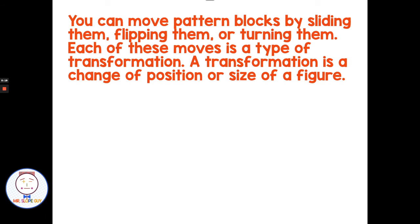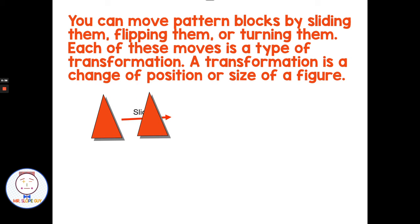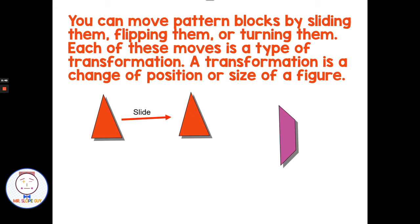You can move pattern blocks by sliding them, flipping them, or turning them. Each of these moves is a type of transformation. A transformation is a change of position or size of a figure. If I take a triangle and I just slide it along, that is a type of transformation. Or if I take and flip a polygon over a line, that is a type of transformation.